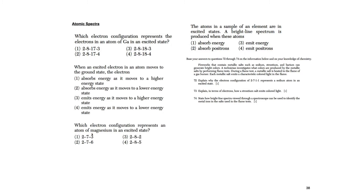Which electron configuration represents magnesium in an excited state? Normal magnesium is 2-8-2, so the excited state would be 2-7-3 — one electron from the second shell jumps to the third. When atoms in a sample are in an excited state and return to ground state, they emit energy and produce a bright line spectrum. For example, fireworks contain metallic salts that produce colored light this way.